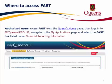Where to access FAST? Authorized users access FAST from the Queen's homepage. A user will log in to MyQueensU Solus, navigate to the My Applications page, and select the FAST link listed under Financial Reporting Information.